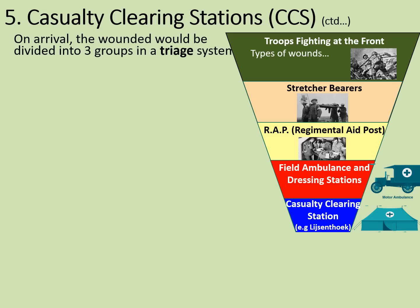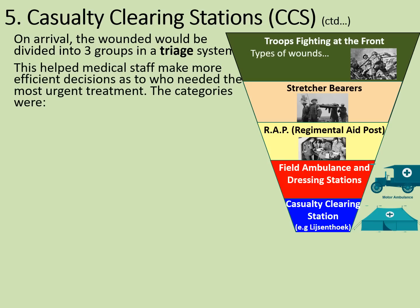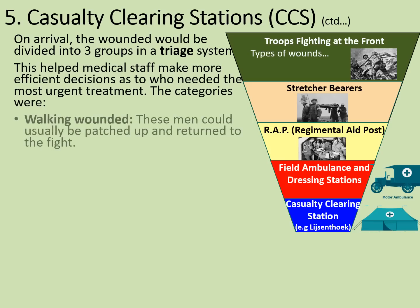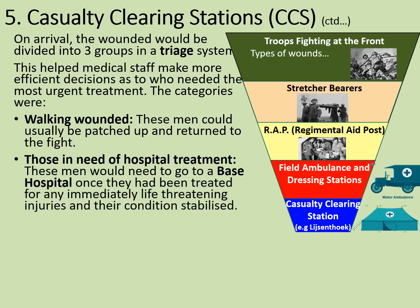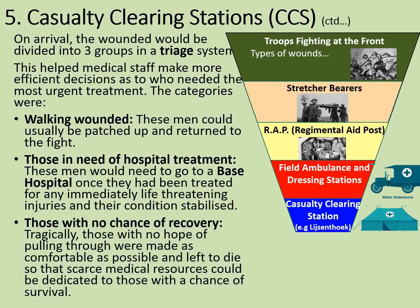On arrival, the wounded would be divided into three groups in a triage system, helping medical staff make more efficient decisions about who needed the most urgent treatment. The categories were: the walking wounded, who could usually be patched up and returned to the fight; those in need of hospital treatment, who would go to a base hospital once immediately life-threatening injuries were stabilised; and those with no chance of recovery. Tragically, those with no hope of pulling through were made as comfortable as possible and left to die, so that scarce medical resources could be dedicated to those with a chance of survival.